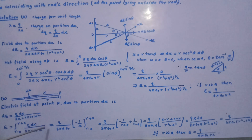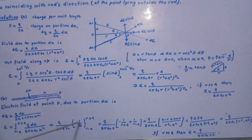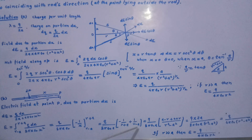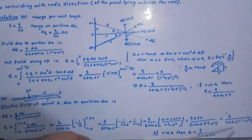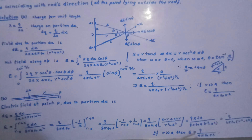Integration of 1/x² gives −1/x. So E = (Q / 8πεrA) · [−1/x] from r − a to r + a = (Q / 8πεrA) · (−1/(r+a) + 1/(r−a)). Taking LCM: (r+a − (r−a)) / ((r+a)(r−a)) = 2A / (r² − a²). The 2A cancels, giving E = Q / (4πε(r² − a²)). If r >> a, then E ≈ Q / (4πεr²), which is our answer.